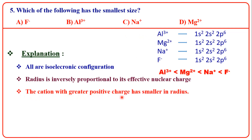Cation with greater positive charge is smaller in radius. Cation radius decreases with the increase in positive charge — as positive charge increases, size decreases.